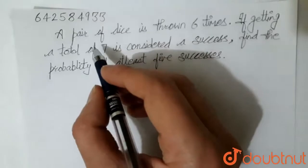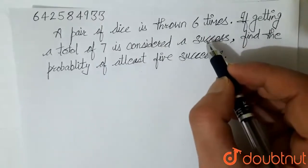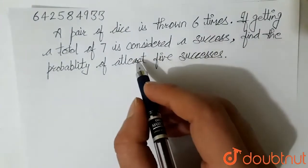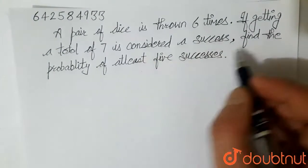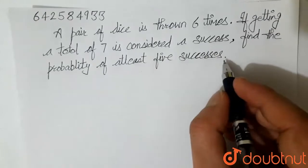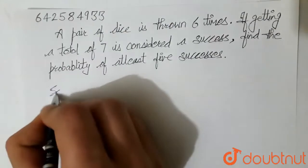Hello student, the question is: a pair of dice is thrown 6 times. If getting a total of 7 is considered a success, find the probability of at least 5 successes. So let's look at the solution.